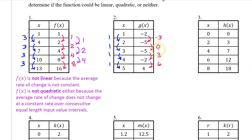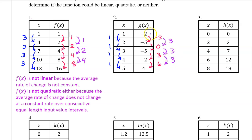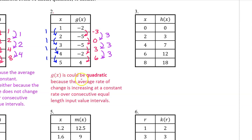For number 2, these are the changes in the output values, and these are the changes in the input values. Because we have consecutive equal length input value intervals, we don't have to show the average rate of change to see it is not constant — so g of x is not linear. We can also tell that the average rate of change is increasing at a constant rate, so g of x could be quadratic. G of x could be quadratic because the average rate of change is increasing at a constant rate over consecutive equal length input value intervals.